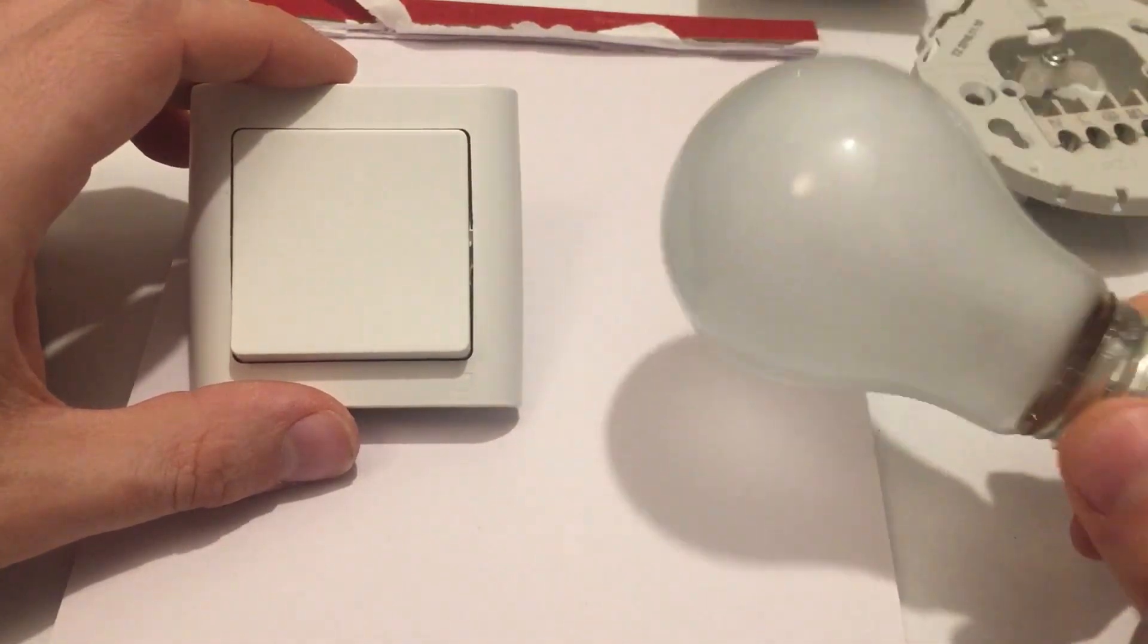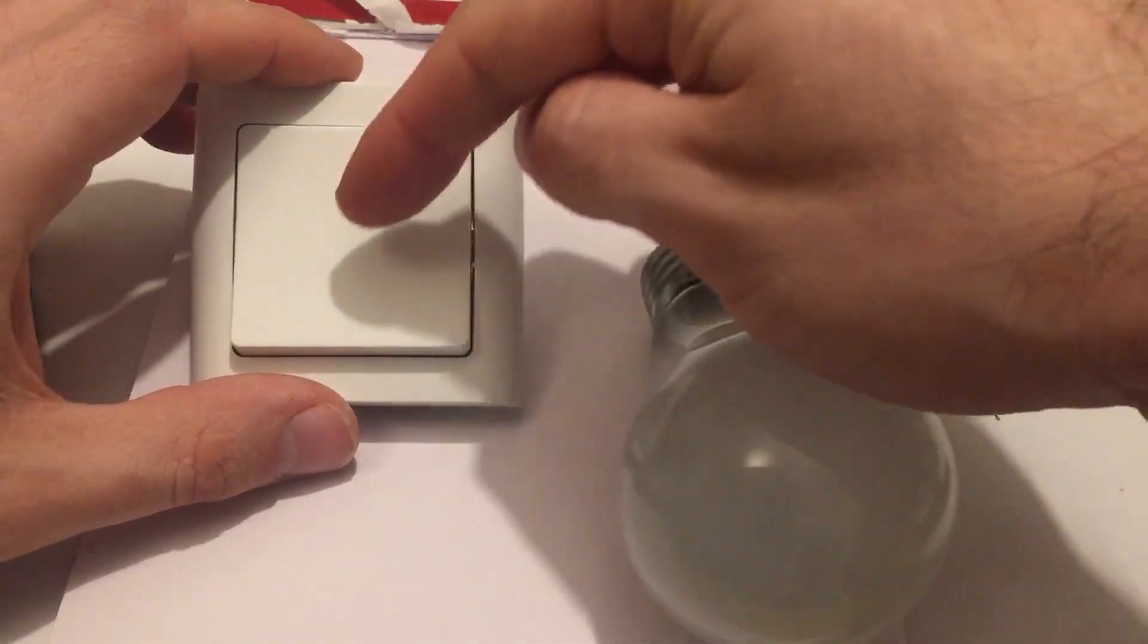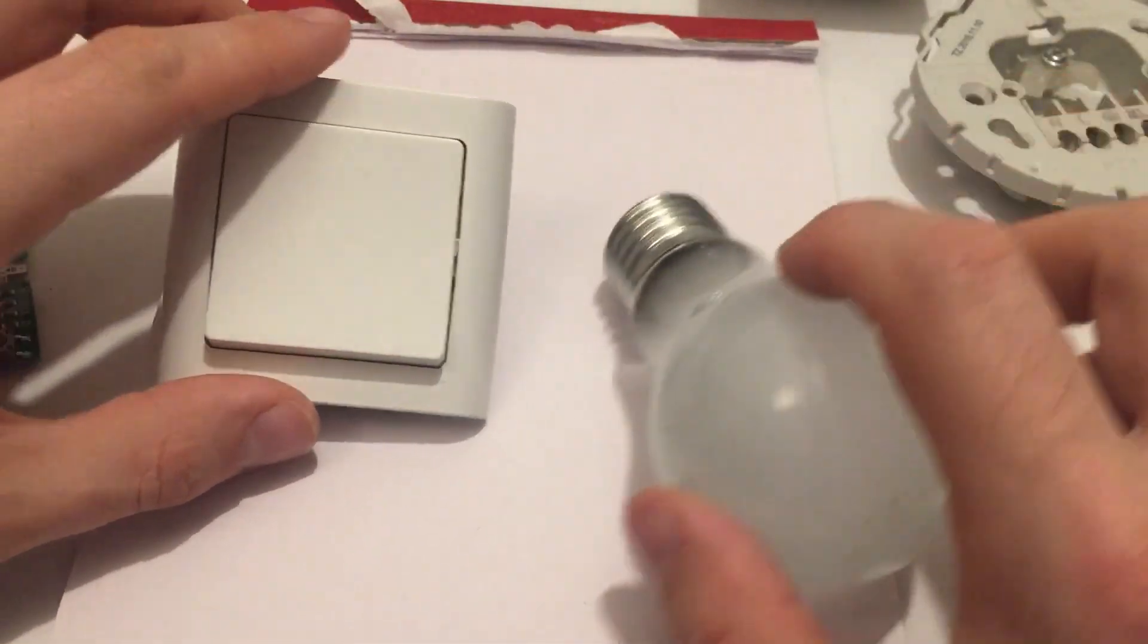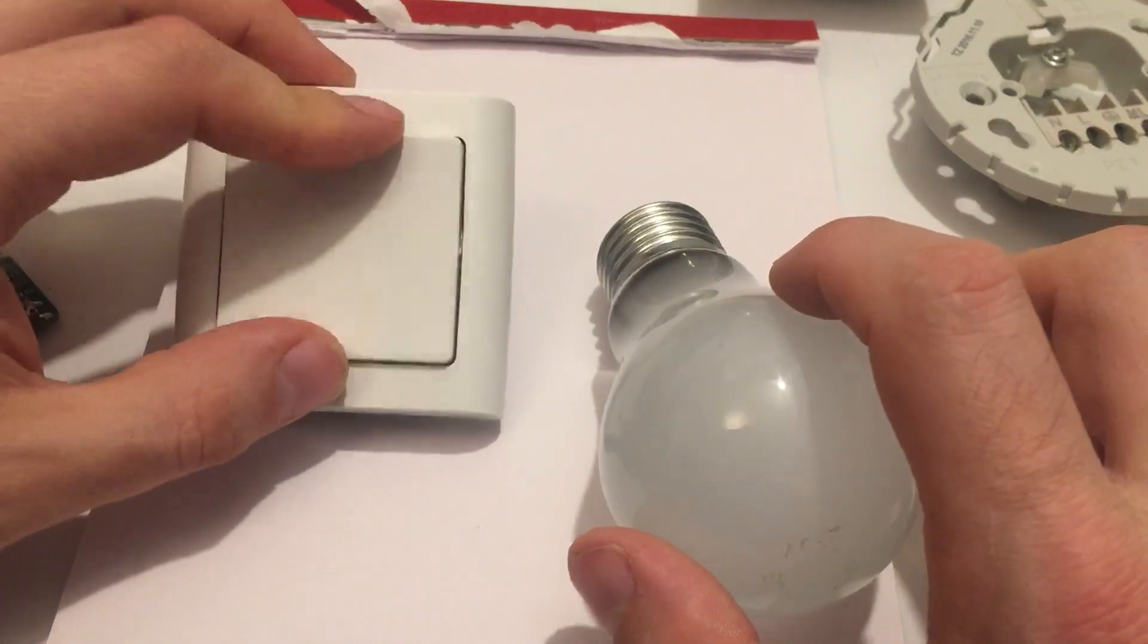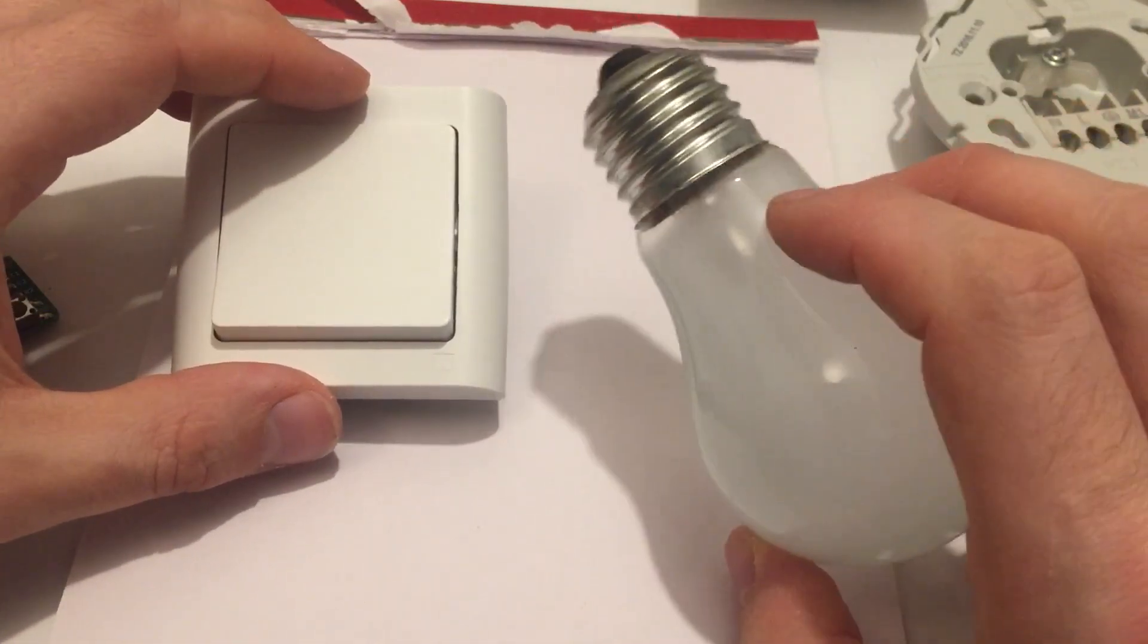So traditionally a light bulb has been connected with a switch and then you could turn it on and off. All was great, all was simple, all was working.